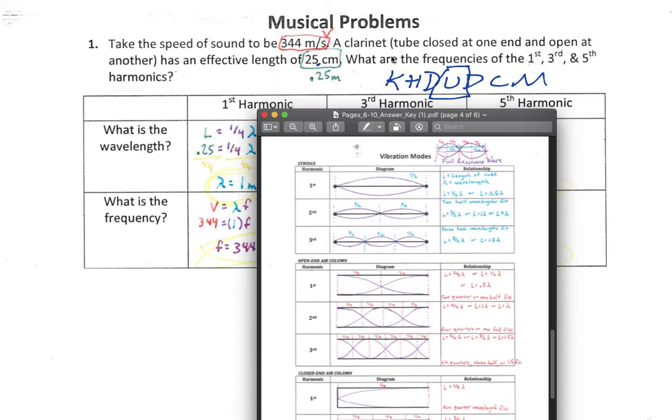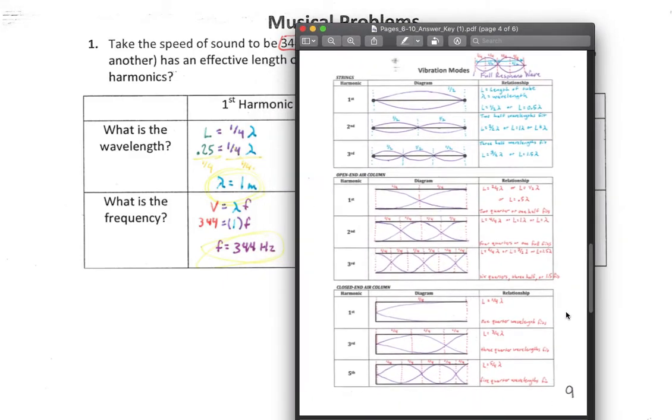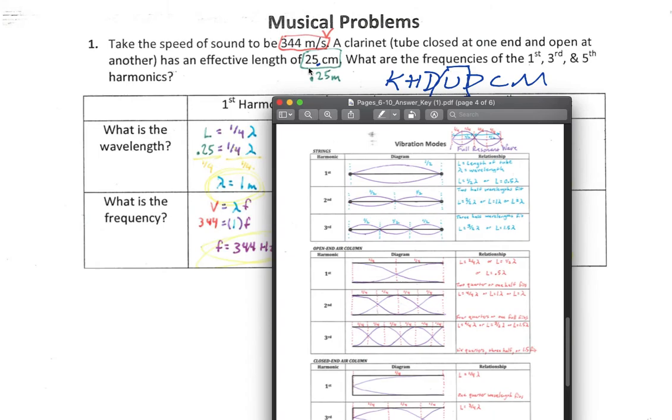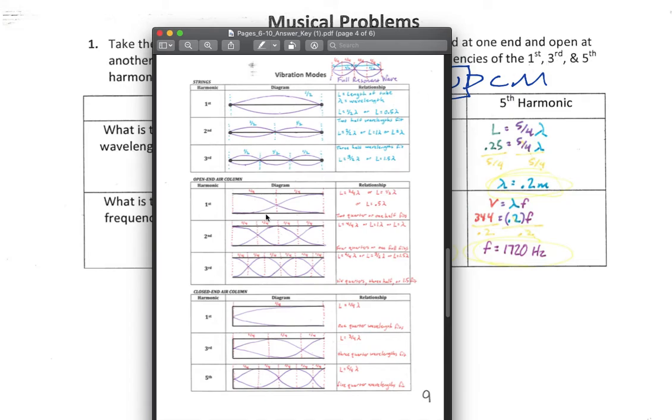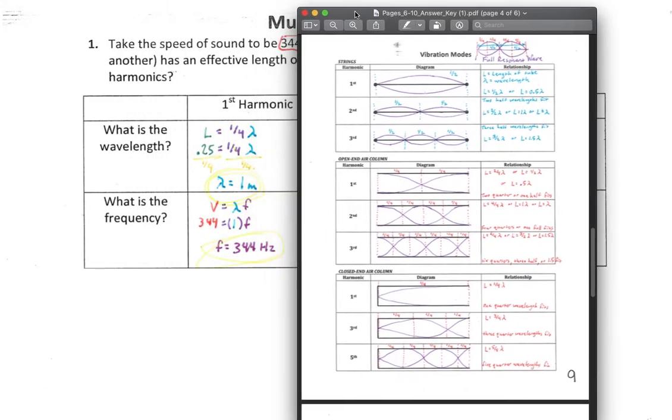It's useful to know that this is a tube that's closed at one end and open at the other end, because then that narrows it down and tells us that we're only looking at this bottom section of the charts, or this specific type of vibration mode. And it's also useful knowing that we're looking for the first, third, and fifth harmonic. Remember, a second and a fourth order harmonic is literally physically impossible, because if we had a second order harmonic, it would mean that either both ends of the tube are open, or both ends of the tube are closed. So since one end is open and one end is closed, we're going to have a node at one end and an anti-node at the other.